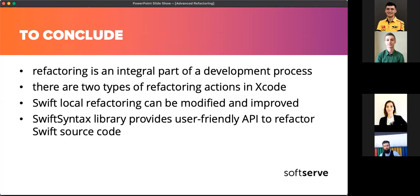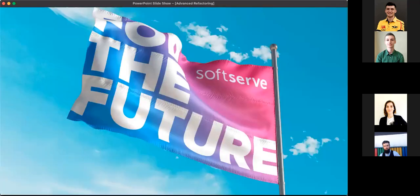To conclude, I would like to point out several key moments: refactoring is an integral part of the development process; usage of automatic tools may help to cope with routines; there is a possibility to alter existing refactoring to meet specific needs or even to write a custom tool; there are two types of refactoring actions based on cursor location and selected range; SwiftSyntax is a very powerful library which wraps Apple's libSyntax used in the compiler; there is no need to write your own parser if it is possible to use a native one; and all the refactoring stuff does not have documentation at all, so you need to figure everything out by ear. That's all I wanted to tell you today. Thank you for your attention, and if you have any questions, feel free to ask.